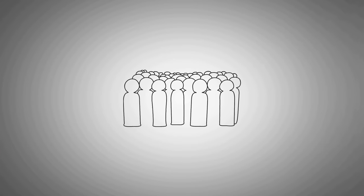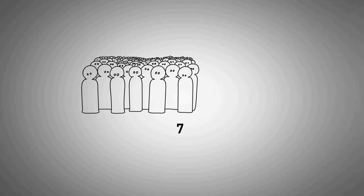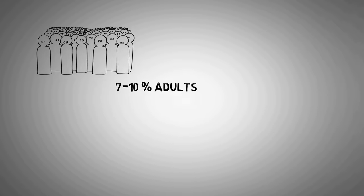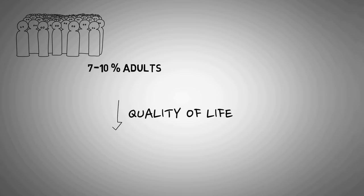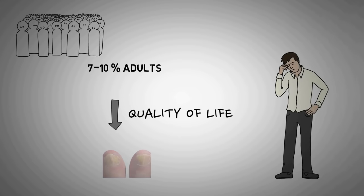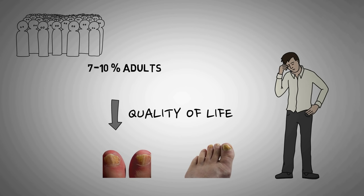Onychomycosis or tinea unguium is very common and it is estimated that about 7-10% of adults suffer from these infections. Although generally harmless and not causing serious problems, they can cause a decrease in quality of life and self-confidence as they distort the nails giving them a very ugly appearance. Fungal nail infections can cause the nails to become discolored, thick, and more likely to crack and break.